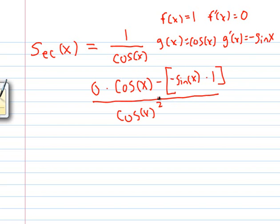Again, we just have to do some clever cancellation, so this is going to go away. And this is going to be equal to sine of x over cosine of x squared.